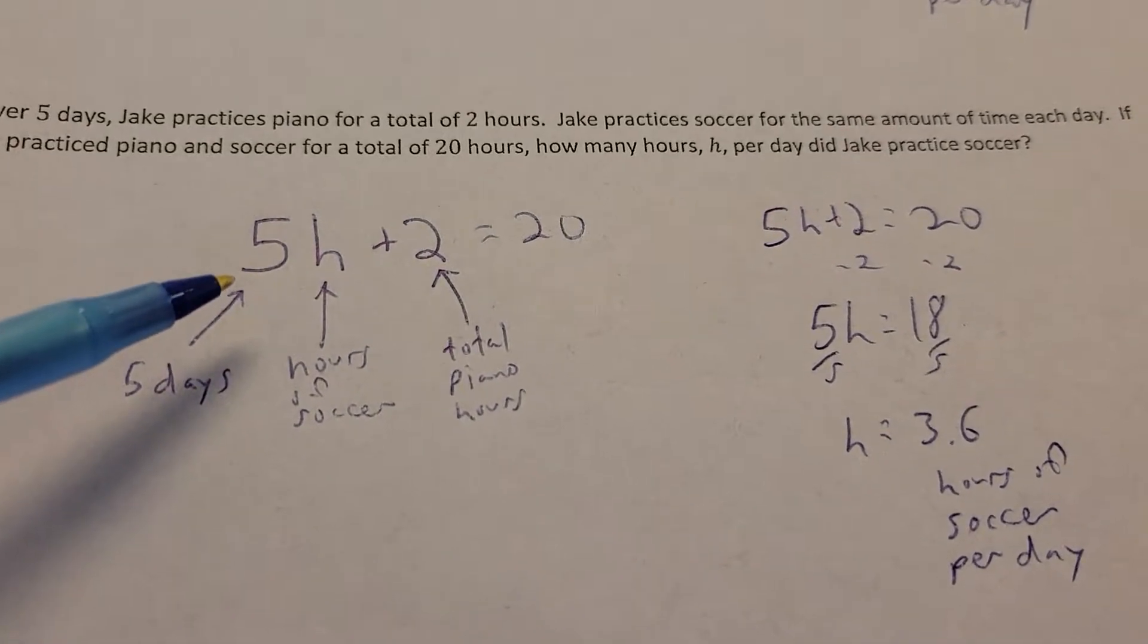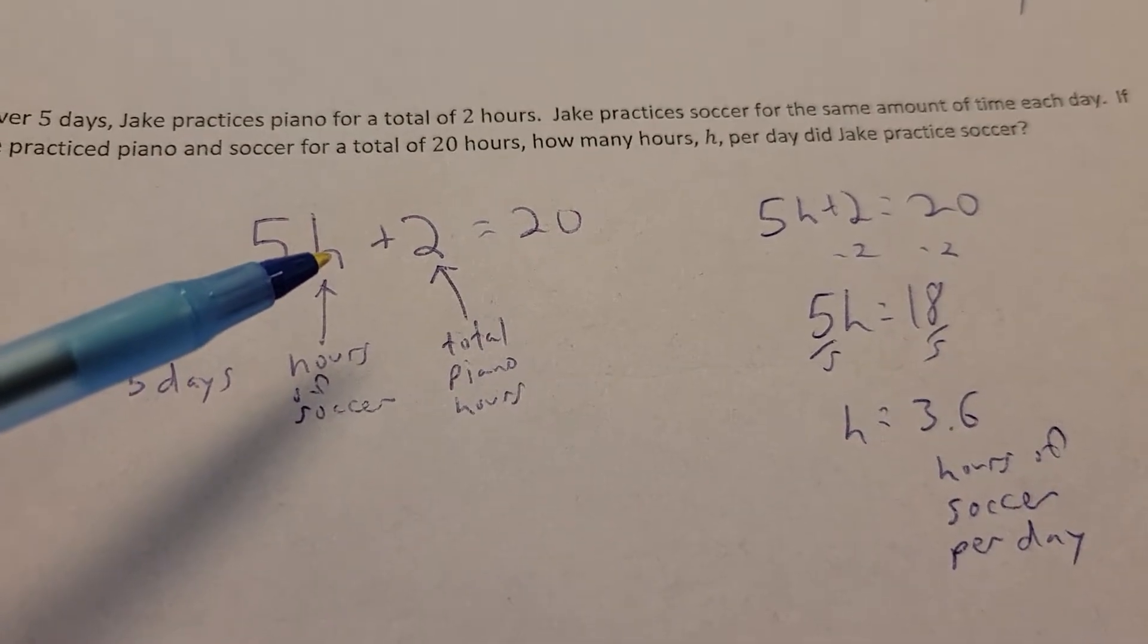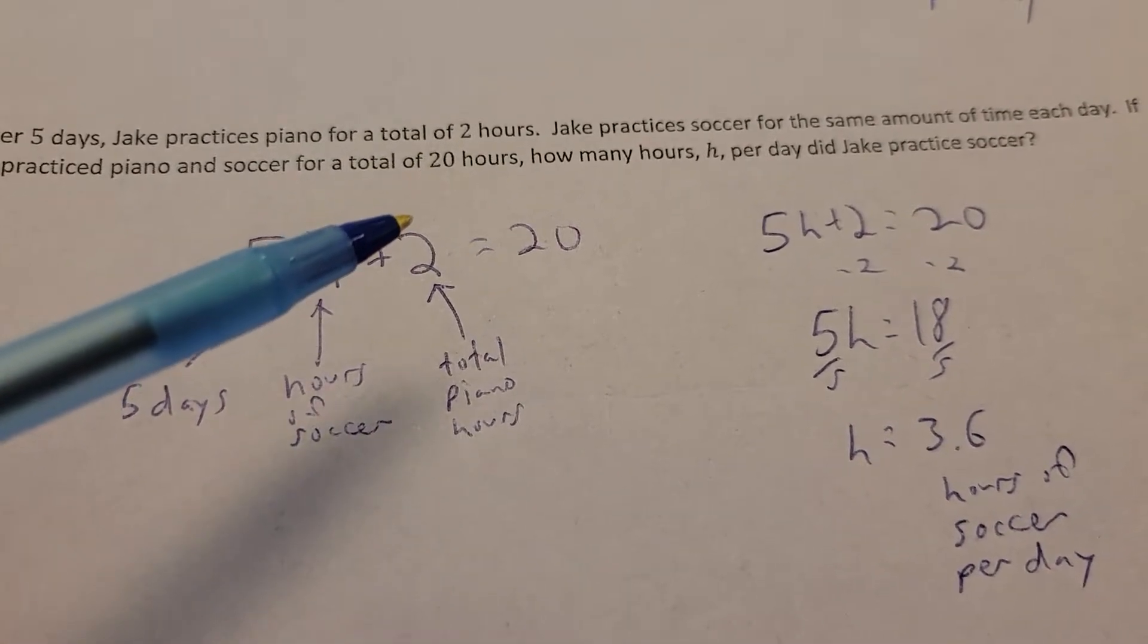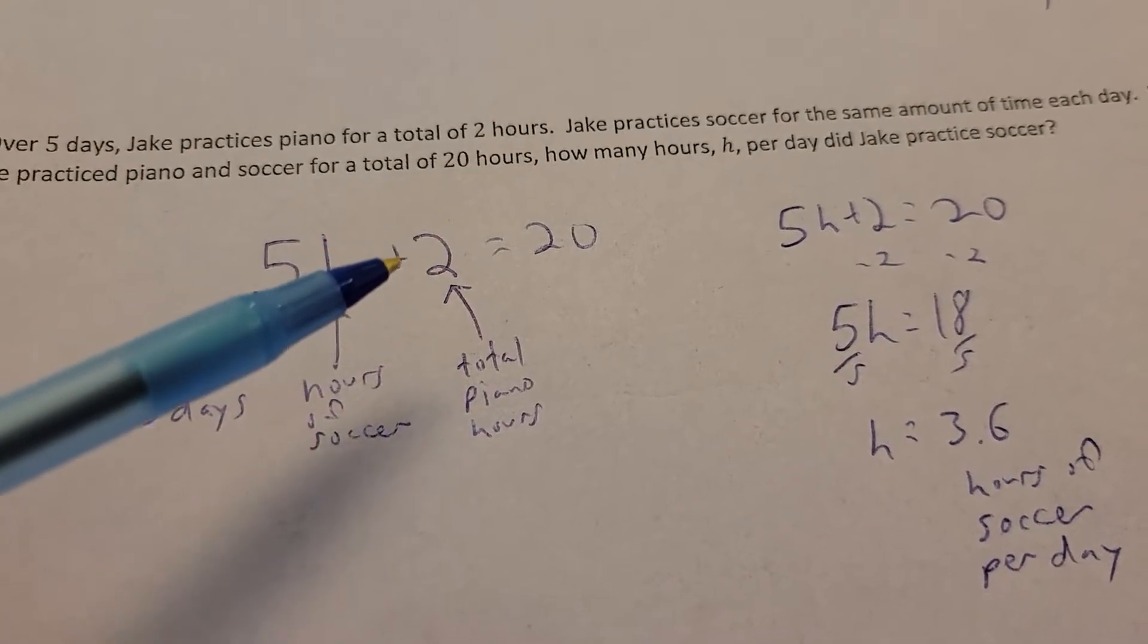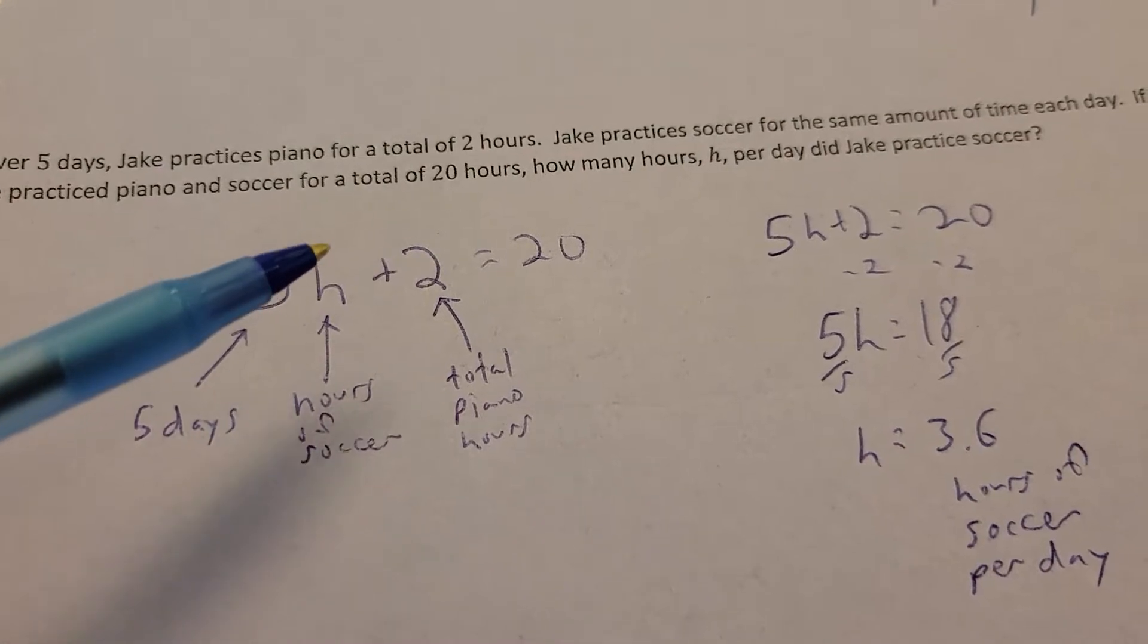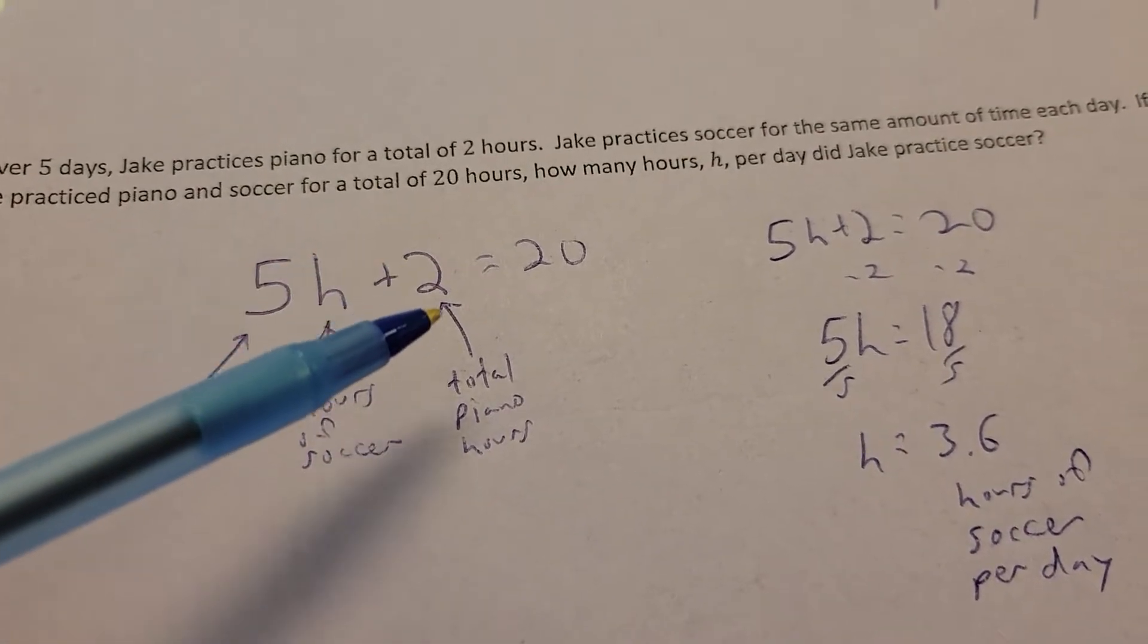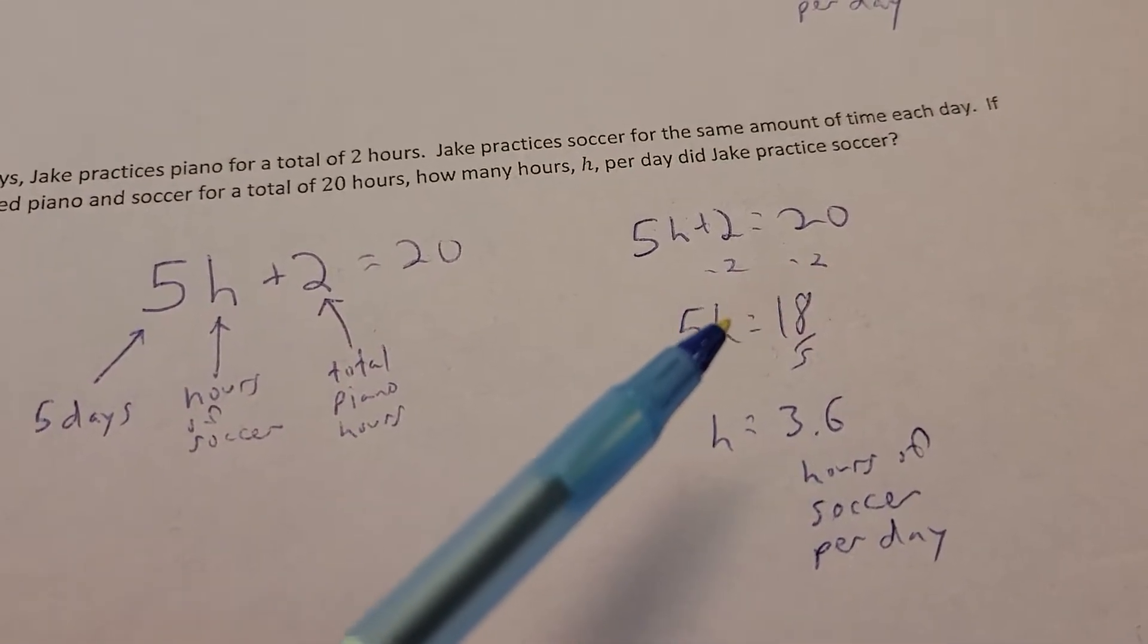Well, now, we got 5 times the amount of hours for soccer, but he doesn't do the two hours of piano per day. It's just two hours of the whole week. So, that's why it's not a distributive property scenario, because we know he's going to do five days worth of soccer practice, but this is only my total for the piano. So, as I go ahead and solve that, I get rid of the two from each side.